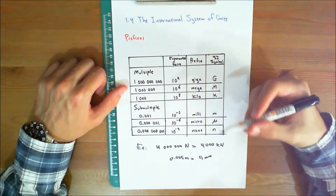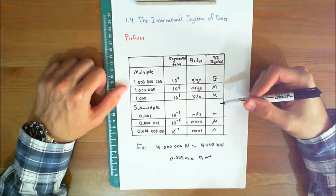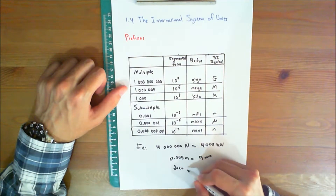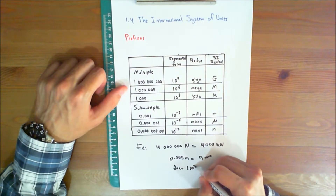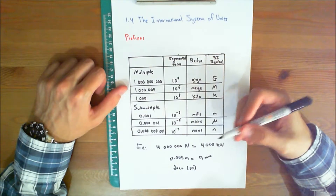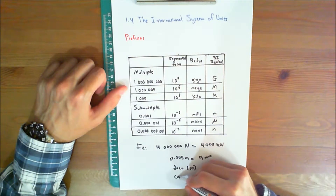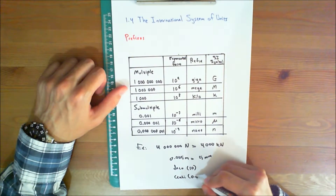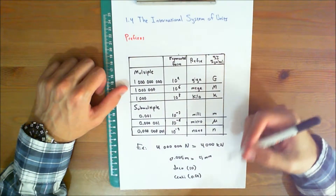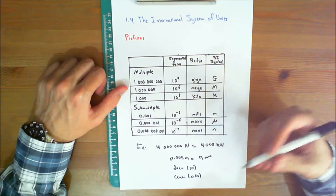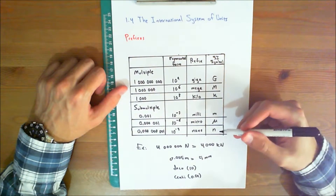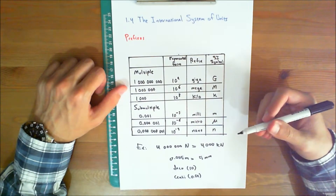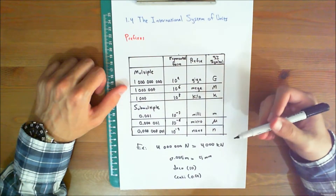Notice that the SI system does not include the multiple DECA (10) or the submultiple CENTI (0.01), which form part of the metric system. Except for some volume and area measurements, the use of these prefixes is to be avoided in science and engineering.